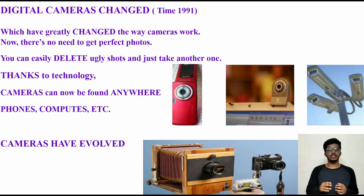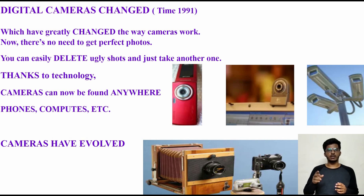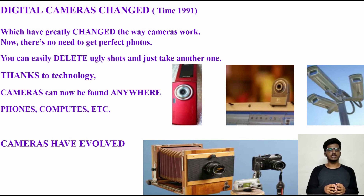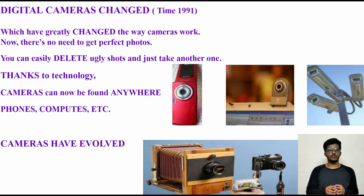In 1991, digital cameras were invented, which greatly changed the way cameras work. In a digital camera, light from the thing you are photographing enters the camera through a lens, and this incoming picture hits the image sensor chip, which breaks it up into millions of pixels. The sensor measures the color and brightness of each pixel, stored as a number. Now there's no need to take a perfect picture every time — you can easily delete unwanted photos and just take another one. Thanks to technology, cameras can now be found anywhere: phones, computers, and everywhere.